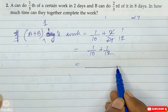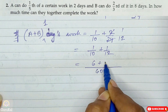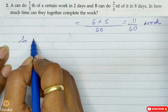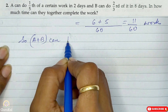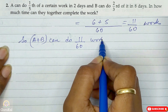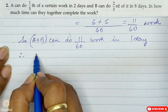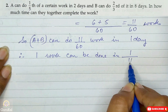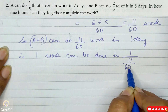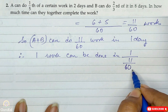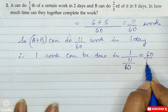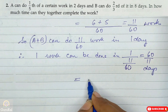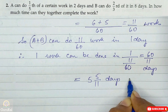The LCM of ten and twelve is sixty. So that becomes six plus five, which is eleven by sixty work. A and B together can do eleven by sixty work in one day. Therefore one complete work is done in sixty by eleven days. This is an improper fraction, so as a mixed number it is five and five by eleven days. This is the answer.